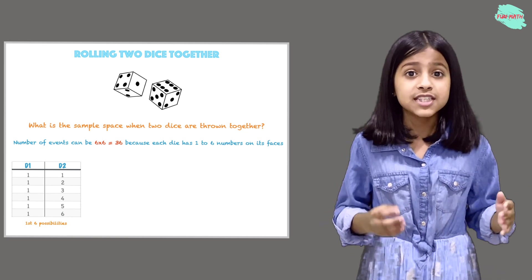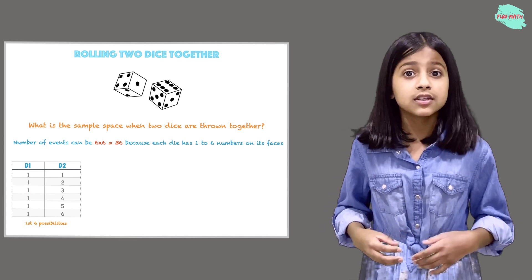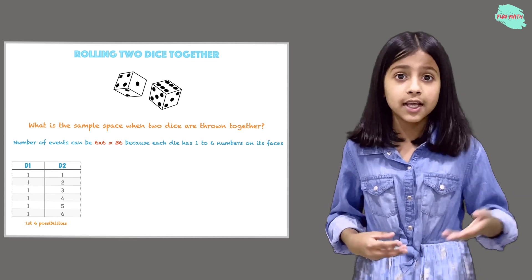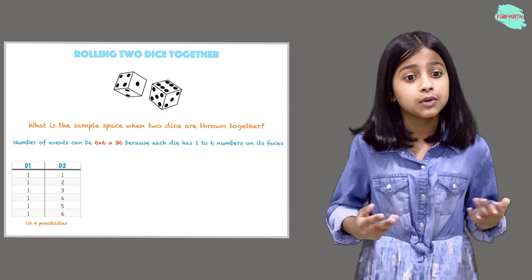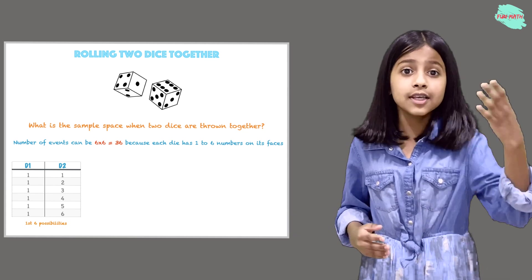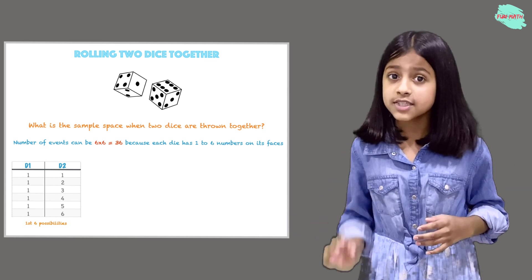So the first 6 possibilities are when we roll dice d1 and d2 together, we can get 1 on d1 and 1 through 6 on d2.